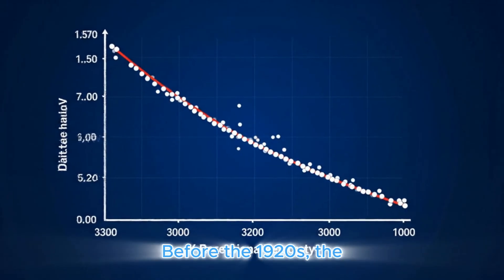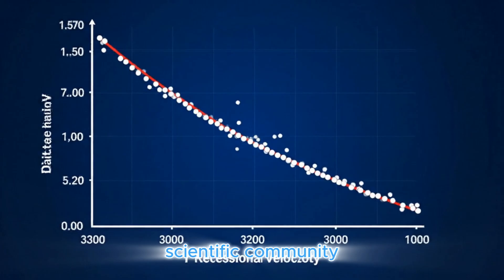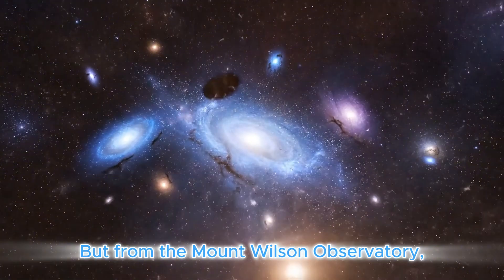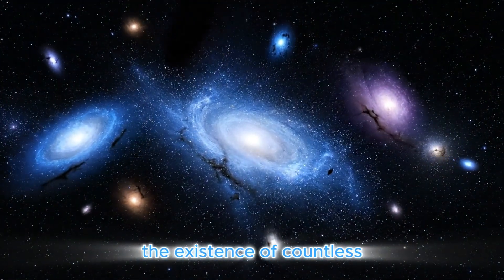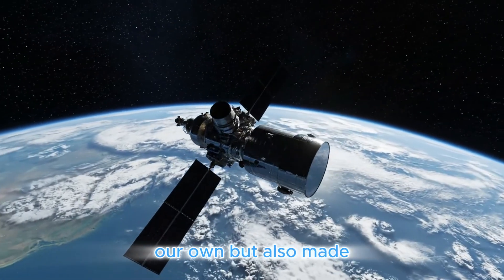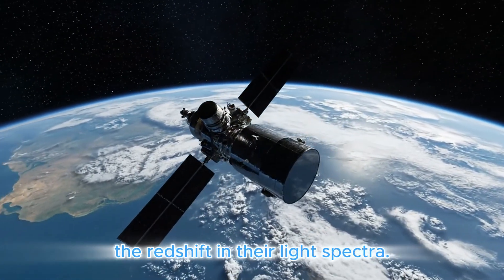Before the 1920s, the scientific community largely believed the Milky Way was the entire universe. But from the Mount Wilson Observatory, Hubble not only proved the existence of countless other galaxies outside our own, but also made an earth-shattering discovery: the redshift in their light spectra.